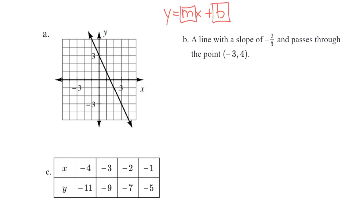So when I look at this first graph, I see the y-intercept is at 0, 3. We always write the y-intercept as an ordered pair because it's a point.